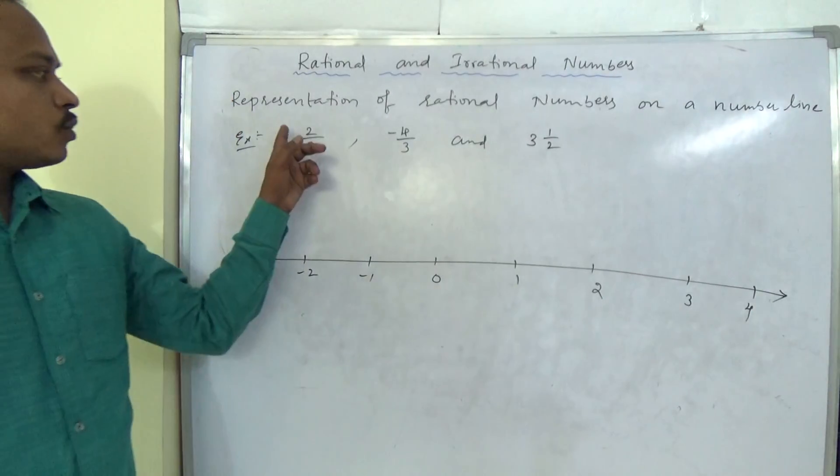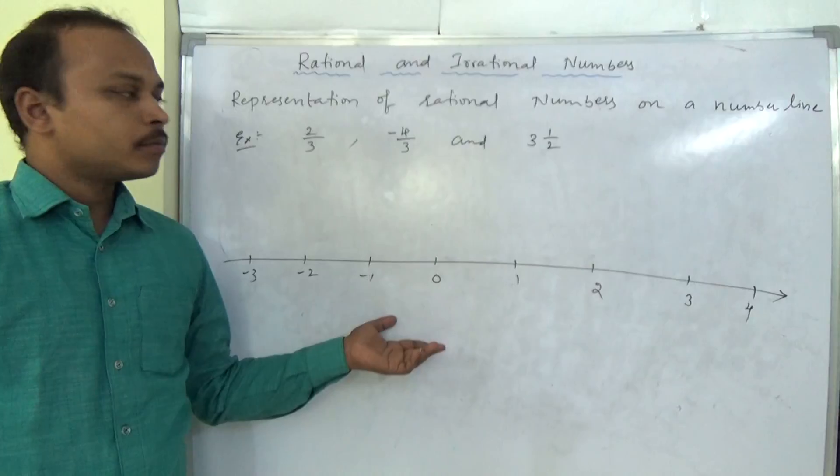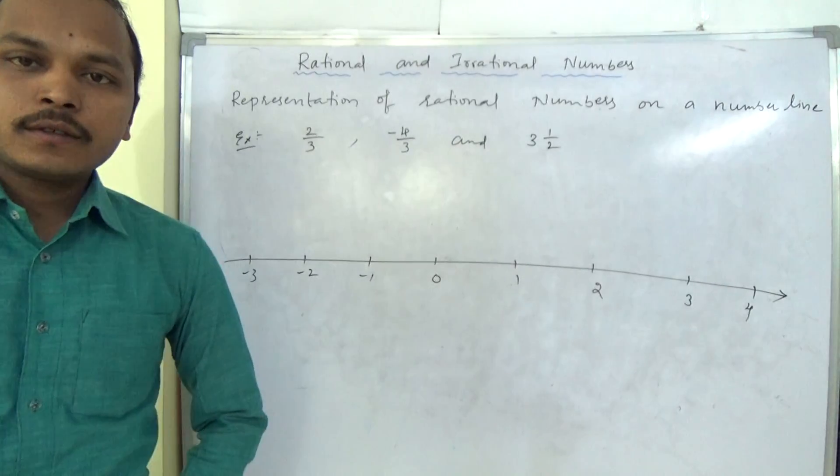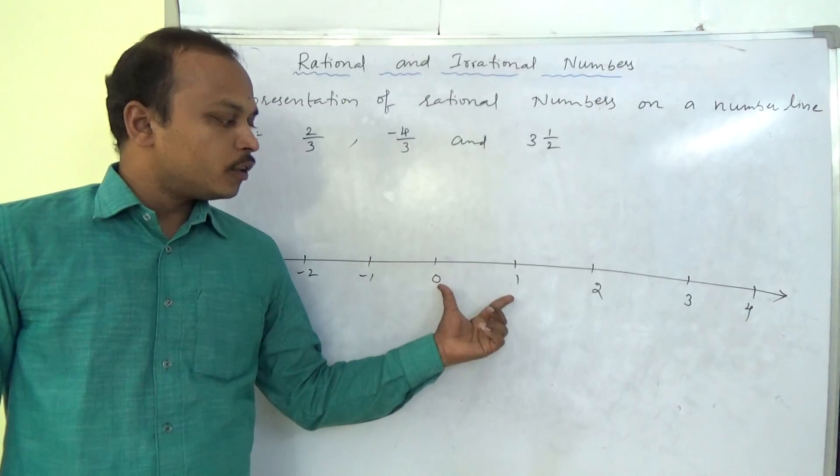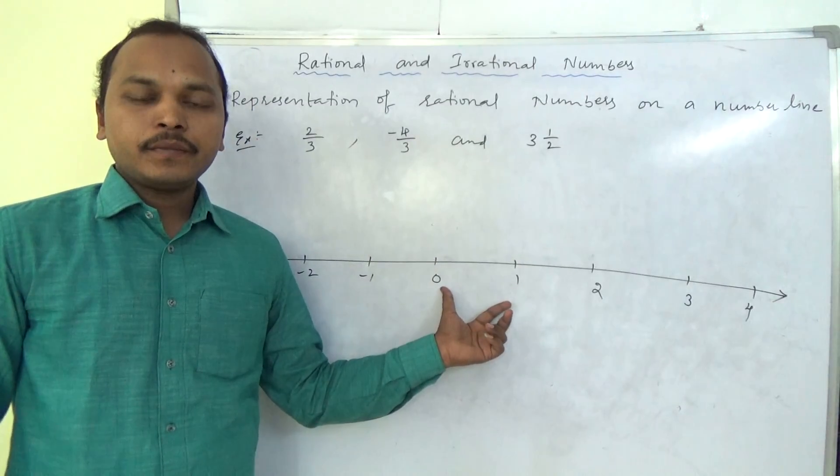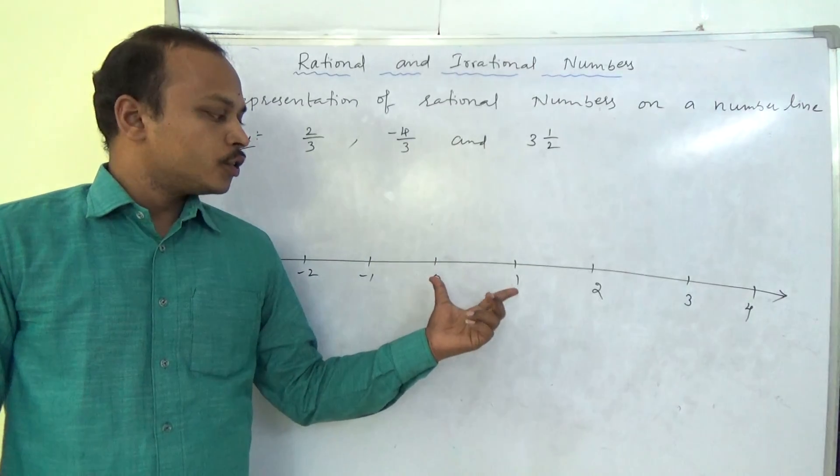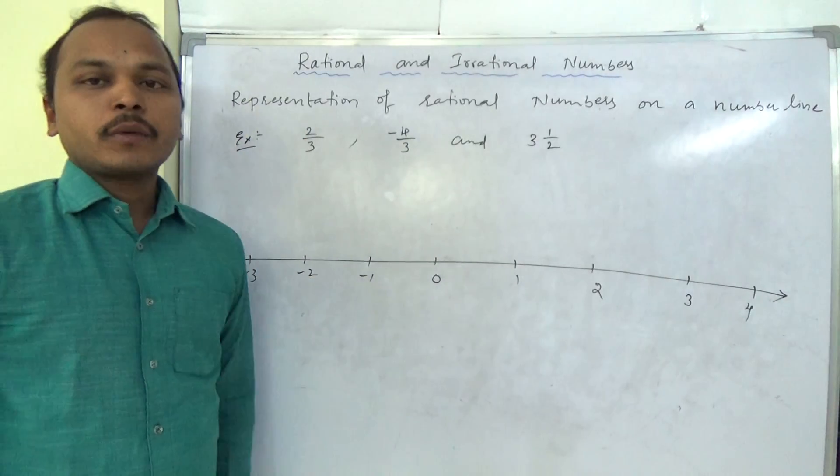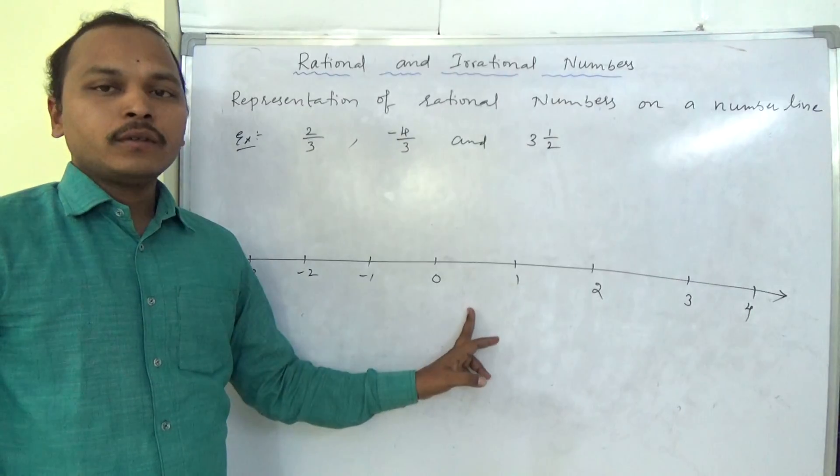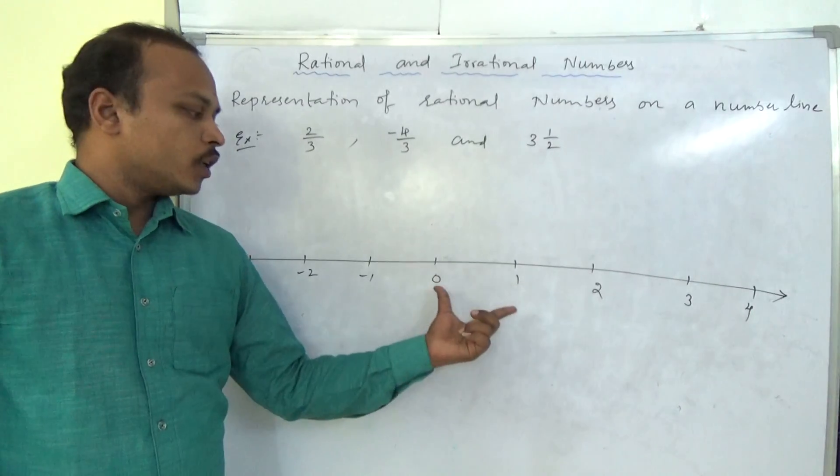First one is 2 by 3, I need to represent on this number line. Here, important thing is any proper fraction should be between 0 and 1. 2 by 3 is the proper fraction, so that should be less than 1 and more than 0, so in between these two.